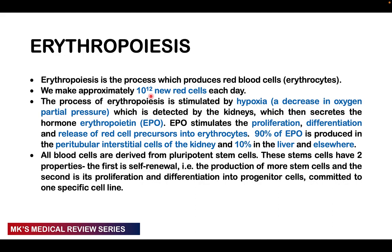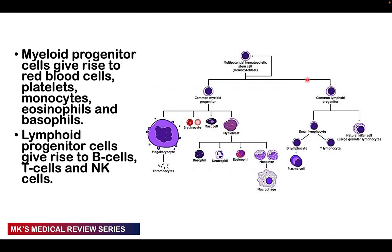The myeloid aspect gives rise to megakaryocytes and thrombocytes, erythrocytes, mast cells, and myeloblasts which give rise to basophils, neutrophils, eosinophils, and monocytes which eventually become macrophages. The common lymphoid progenitor cells give rise to small lymphocytes, B lymphocytes that differentiate into plasma cells forming antibodies, and T lymphocytes including T helper, T killer, and T suppressor cells. Non-B-non-T cells are natural killer cells, also called large granular lymphocytes.